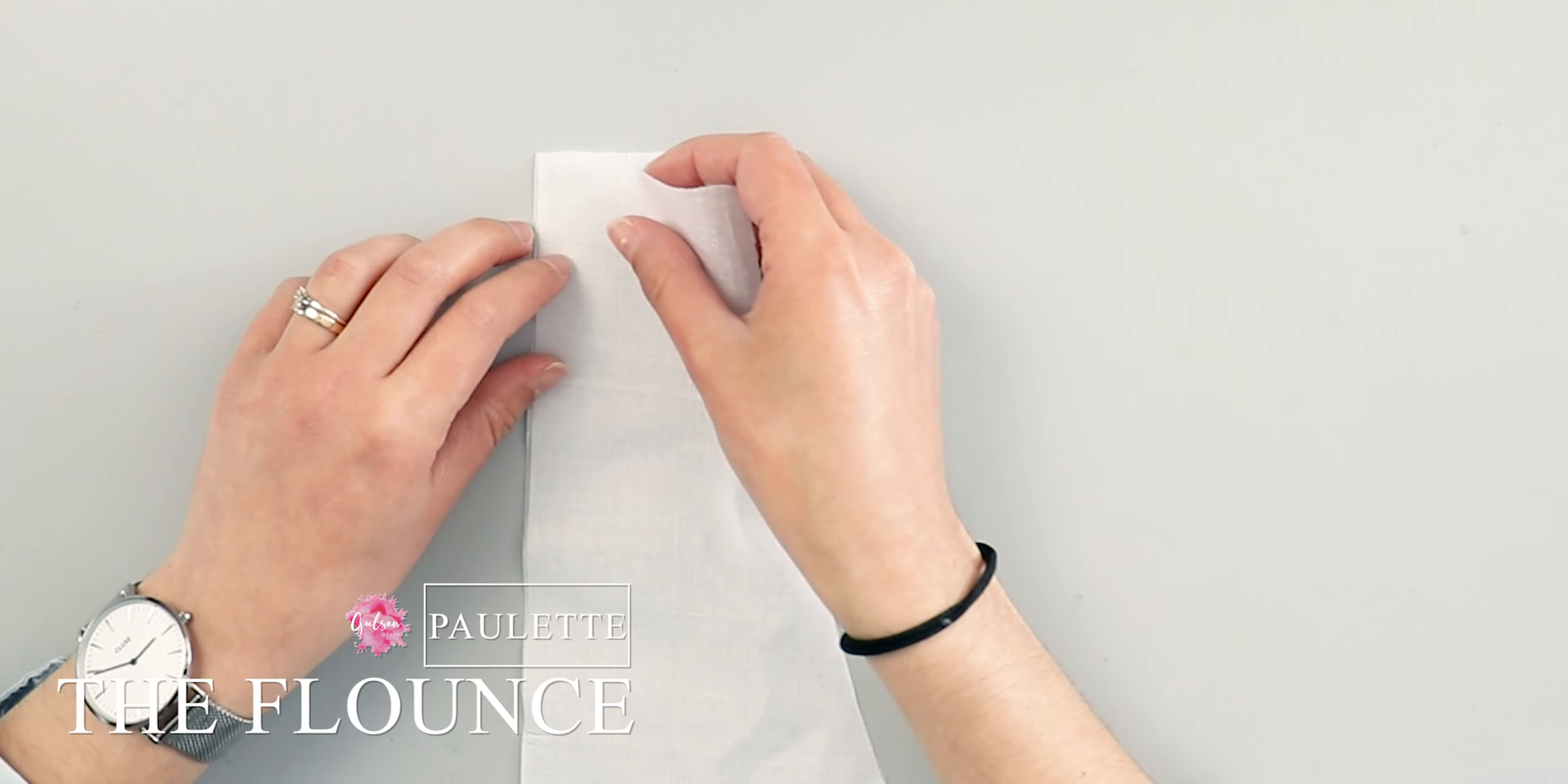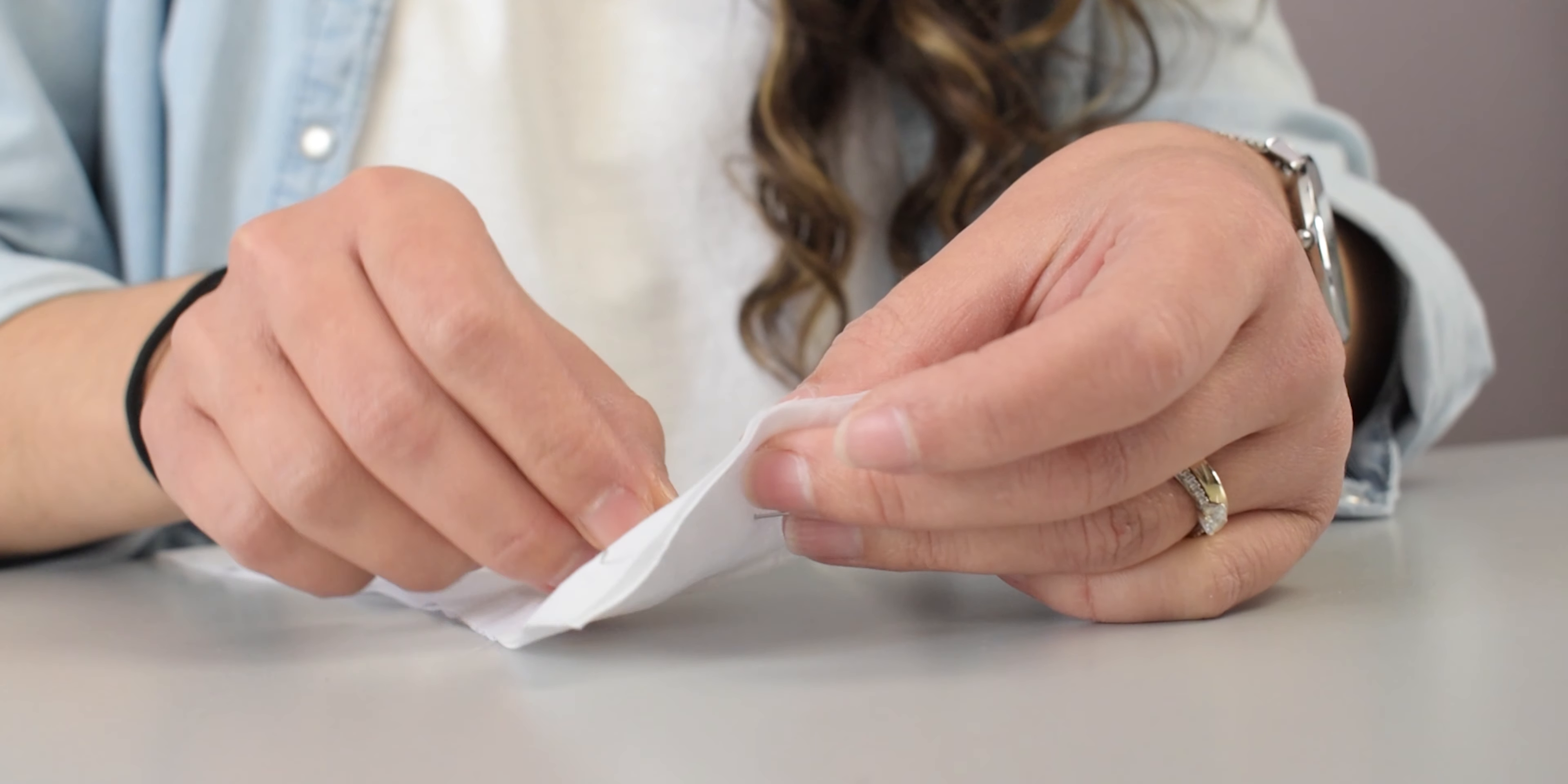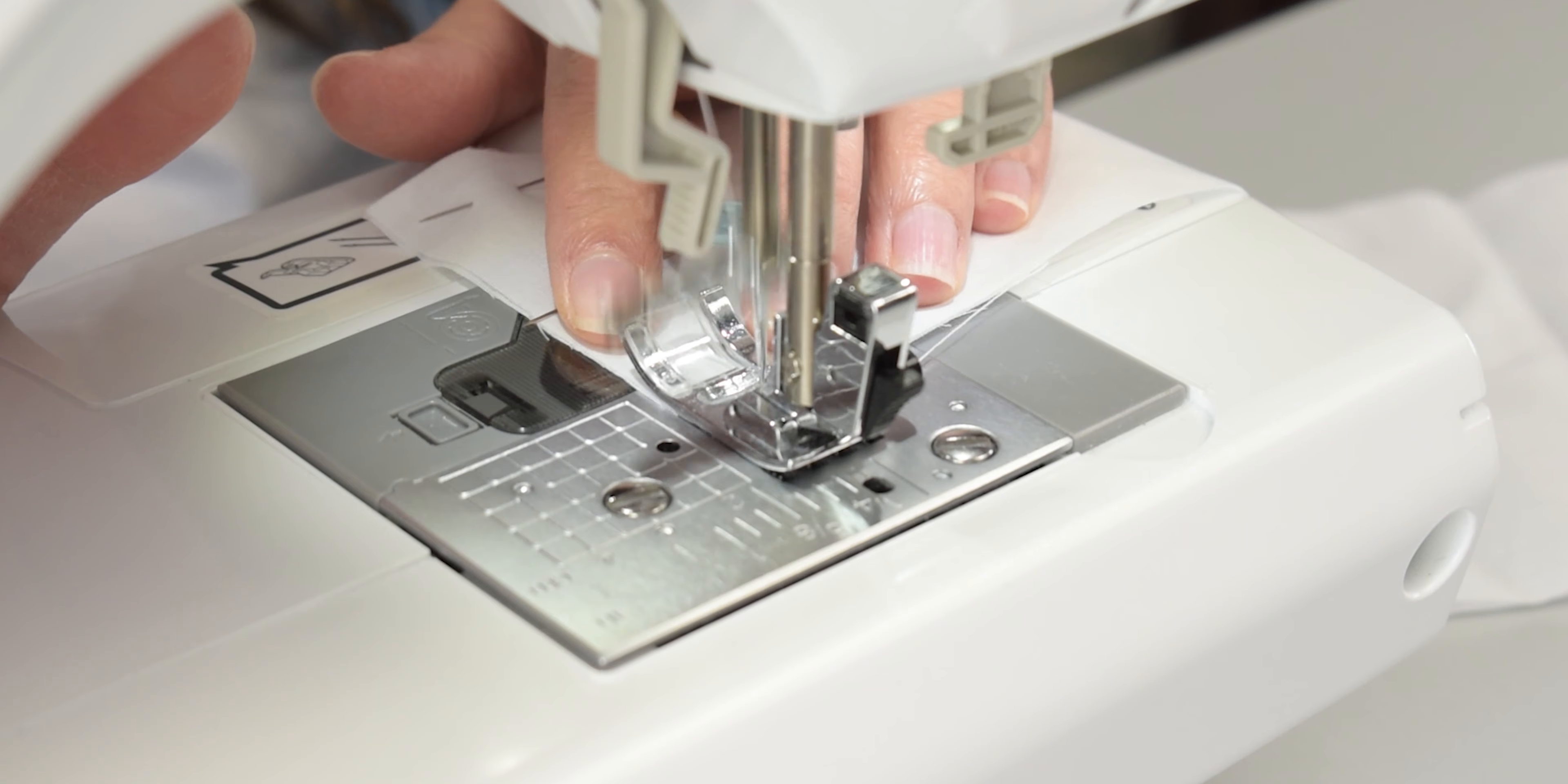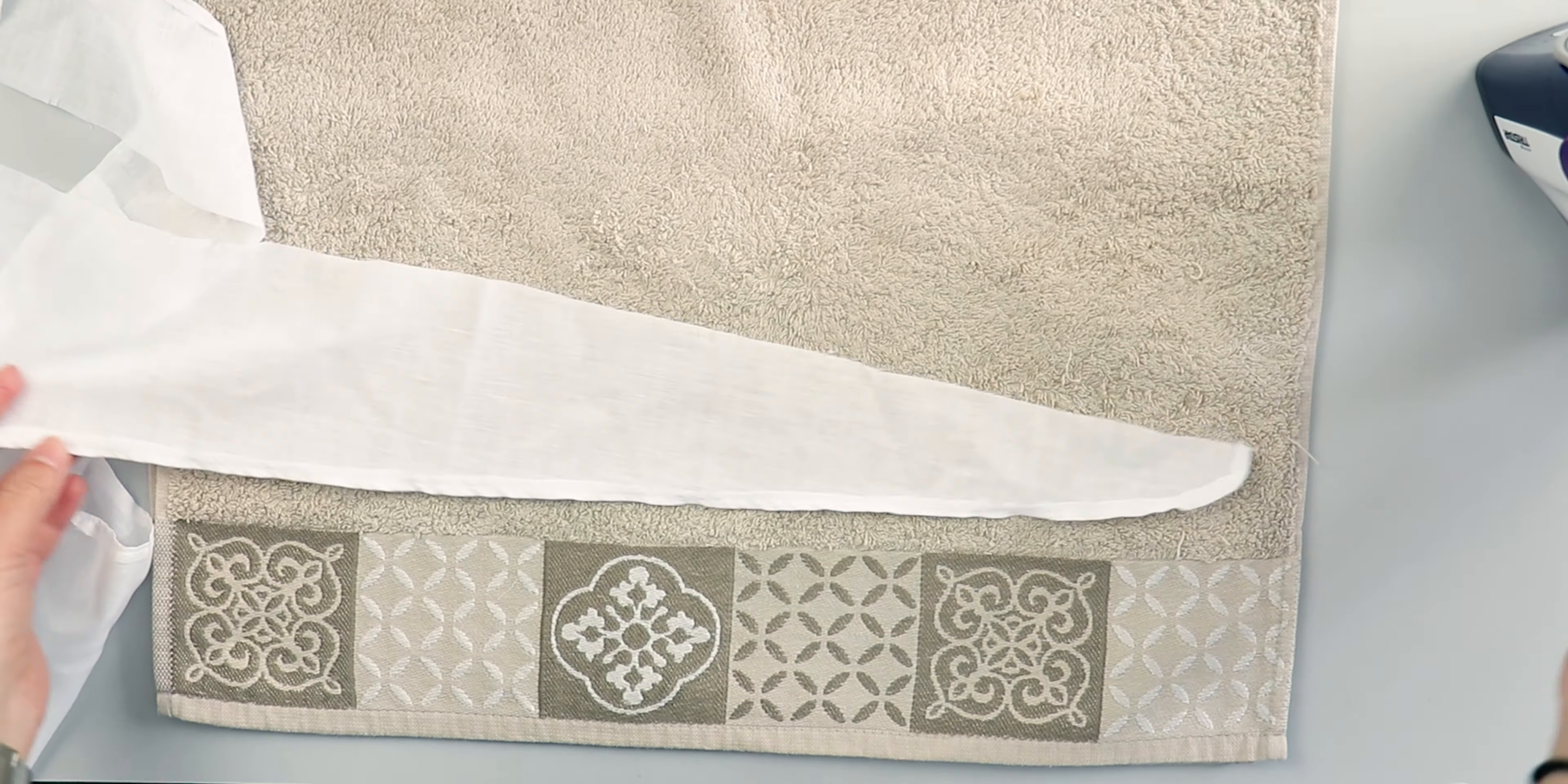Place the two flounce pieces together with the wrong side facing out. Pin the edge and sew along here. Next, overlock that same edge.